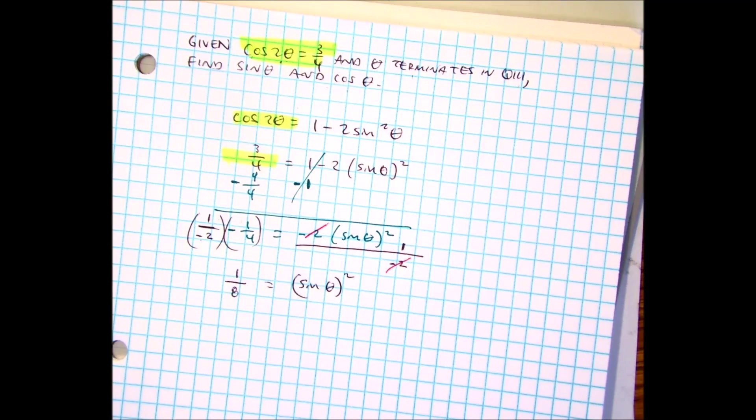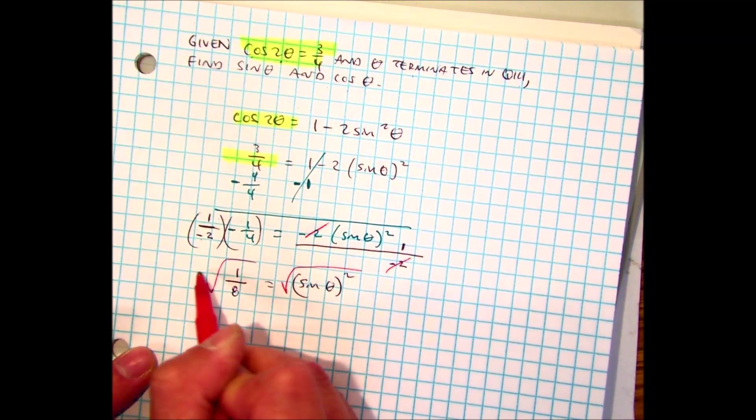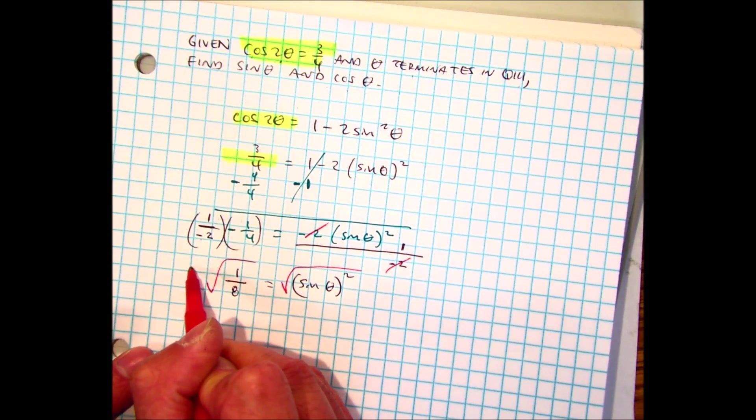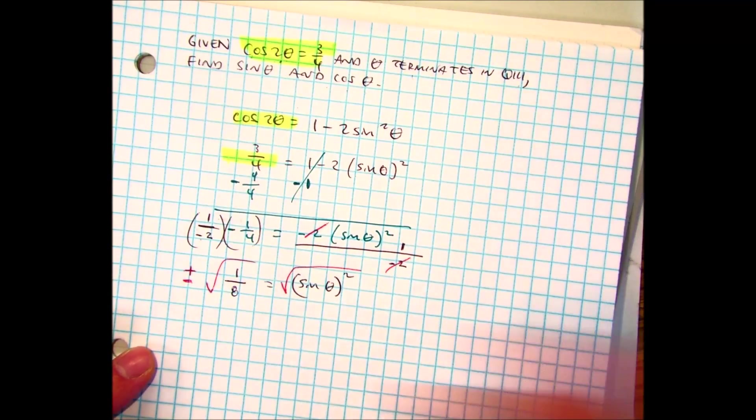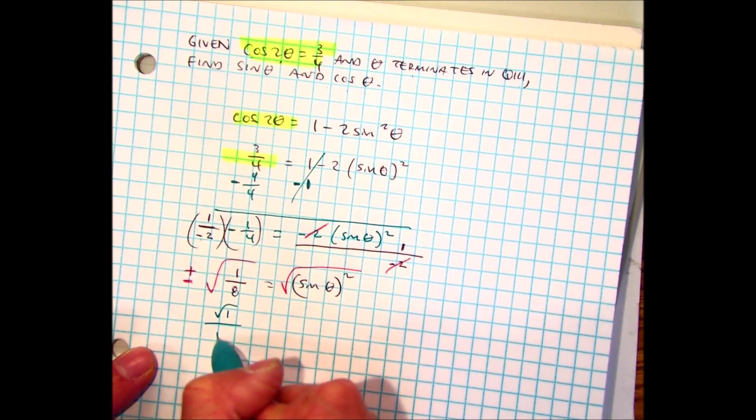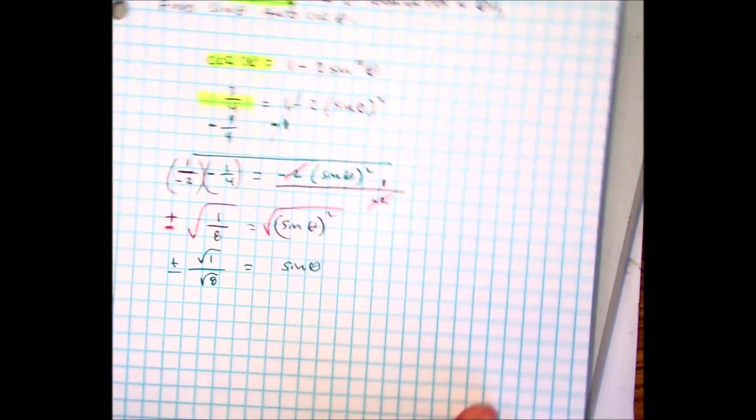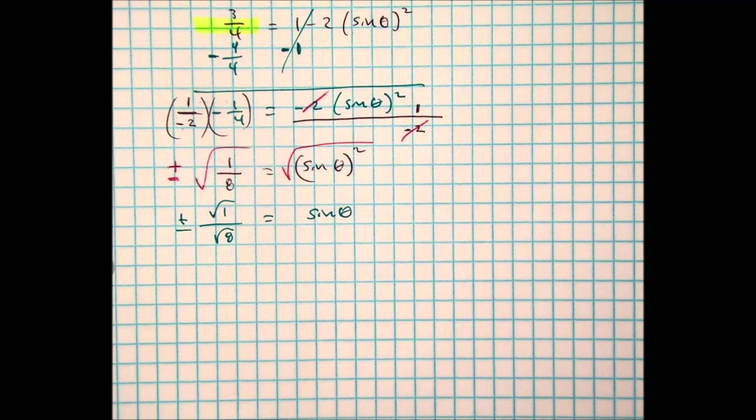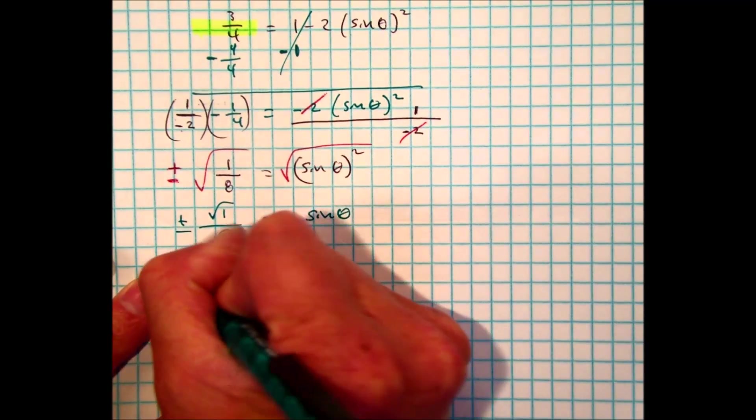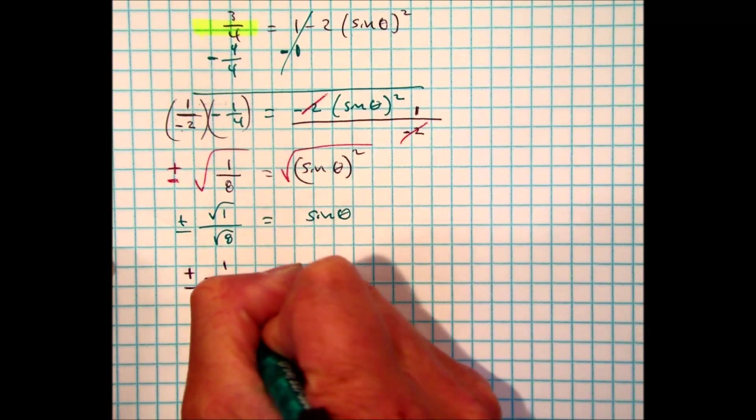Class, how do I get sine by itself? I'm going to take the square root of both sides. Be careful now. When I take the square root of both sides, plus or minus. So I have the square root of 1 over the square root of 8 equals sine of theta. The square root of 1, and the square root of 8 is 2 radical 2.